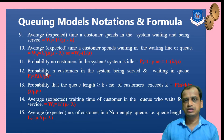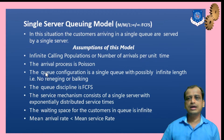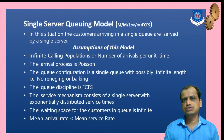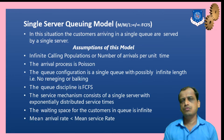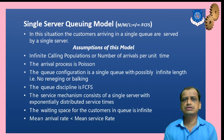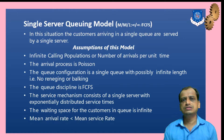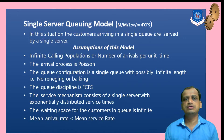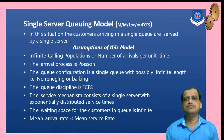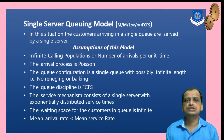Let's look into examples based on this model and quickly revise the assumptions of the single server model. It is M/M/1/∞/∞/FCFS — the two M's stand for the arrival distribution and service distribution respectively, one is for the single server, and infinity refers to the space at the facility as well as the incoming calling population, which is infinite.